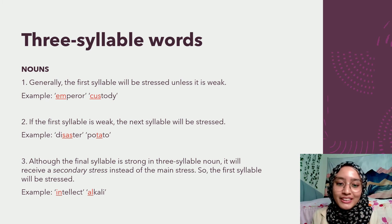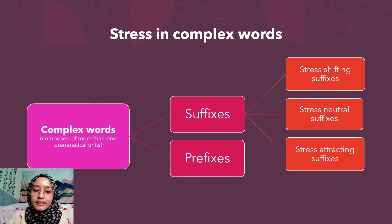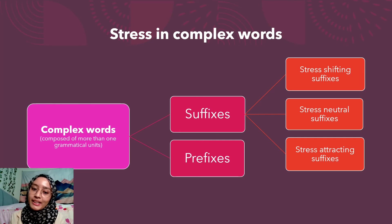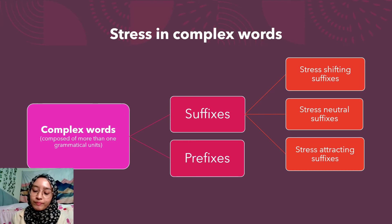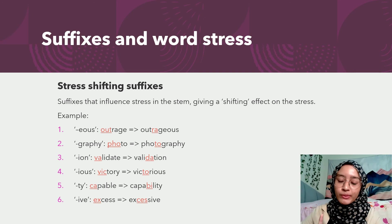Great, because we're moving on to the second part of the presentation, which is stress in complex words. Complex words is when a word has an added suffix or prefix. So that's what we're going to look at right now, especially suffixes. Under word stress and suffixes, we have three aspects. The first one is stress-shifting suffix.